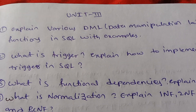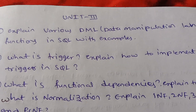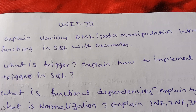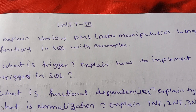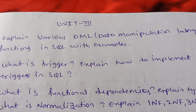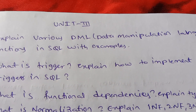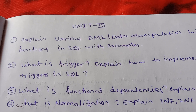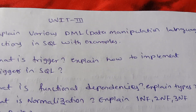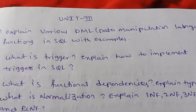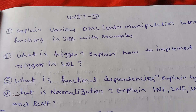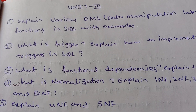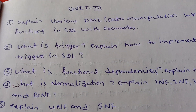Next, what is functional dependencies? Explain types. What is normalization? Explain 1NF, 2NF, 3NF and BCNF. Next, explain 4NF and 5NF.